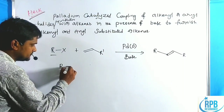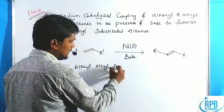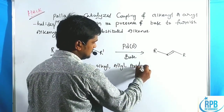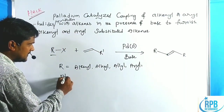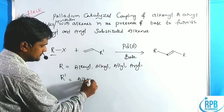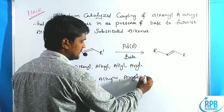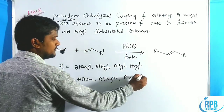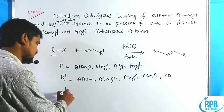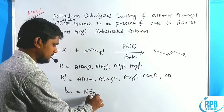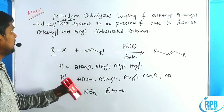Here R can be any type of alkenyl, alkyl, allyl, or aryl group — so many examples exist. R' is equal to alkenes, alkynes, aryl, or it may be alkyl, CO₂, or OR groups. The bases used in this Heck cross-coupling reaction include triethylamine and sodium ethoxide.